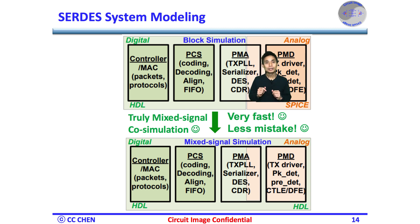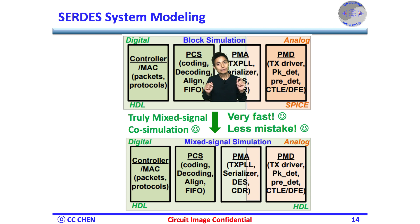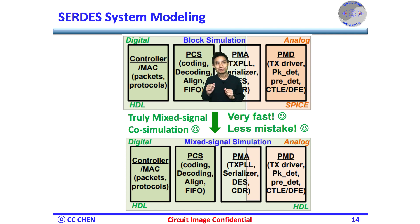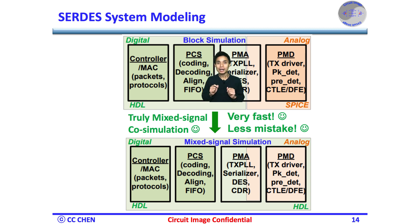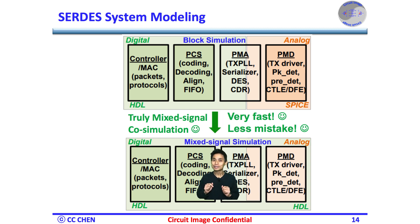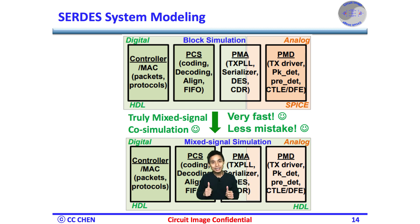But to model functions above PMA and PMD levels like the physical coding sublayer PCS and controller, SPICE is no longer the right tool. Instead, an HDL model is a must for all digital blocks. To achieve a mixed signal verification efficiently, the HDL model for the PMA and PMD analog blocks is a must. Then, the whole SerDes system can simulate together in the HDL model quickly and catch any mistake between the block boundary.